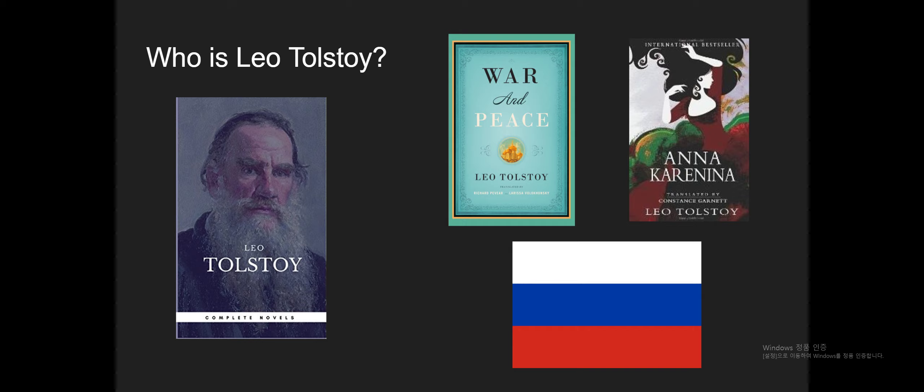In 1873, Tolstoy set to work on the second of his best-known novels, which is called Anna Karenina. He continued to write fiction throughout the 1880s and 1890s. One of his most successful later works was The Death of Ivan Ilyich. Tolstoy died on November 20, 1910 in Russia.